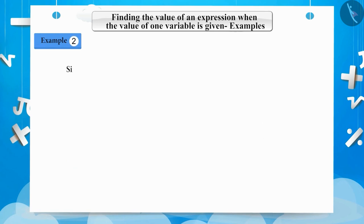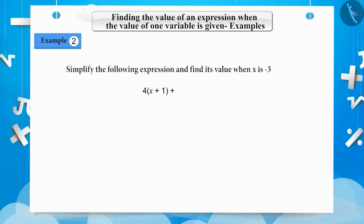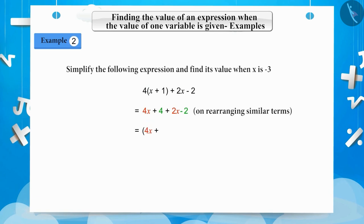Example 2: Simplify the following expression and find its value when the value of x is minus 3: 4(x plus 1) plus 2x minus 2. By simplifying, we get 4x plus 4 plus 2x minus 2. By rearranging similar terms, we get 4x plus 2x plus 4 minus 2. By solving similar terms, we get 6x plus 2.